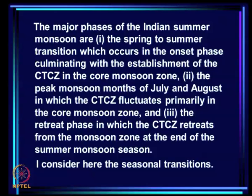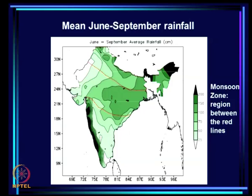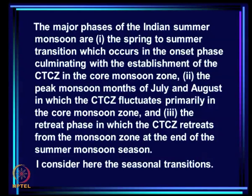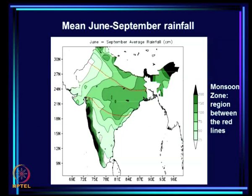The major phases of the Indian monsoon are: the spring to summer transition which occurs in the onset phase, culminating with the establishment of the CTCZ in the core monsoon zone — indicated by the red dashed lines. Then in the peak monsoon months of July and August, the CTCZ fluctuates primarily in the core monsoon zone, and finally the retreat phase, in which the CTCZ retreats from the monsoon zone at the end of the summer monsoon season. In this lecture I will consider first the seasonal transition from spring to summer.